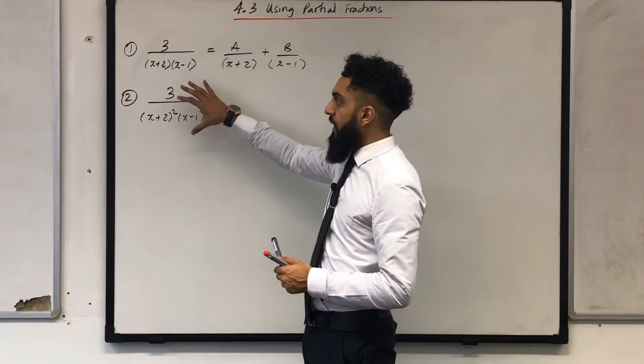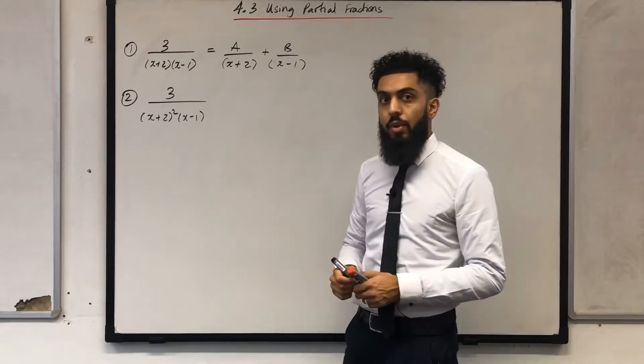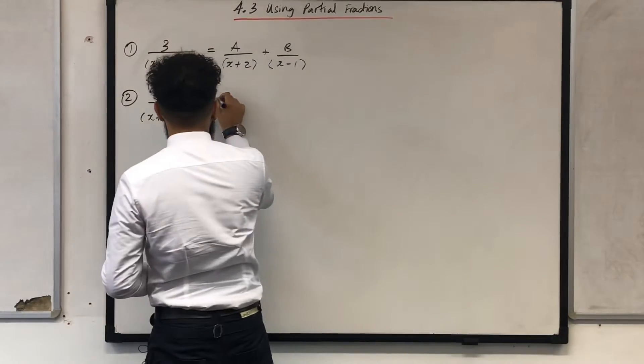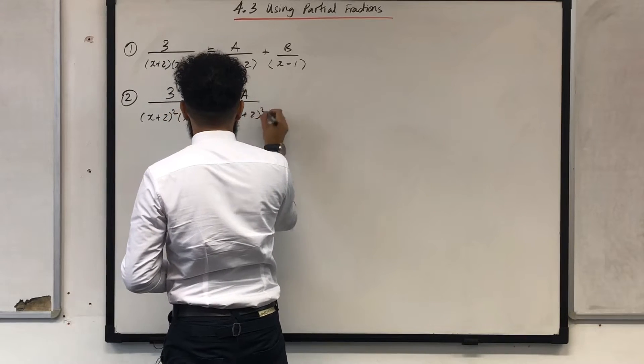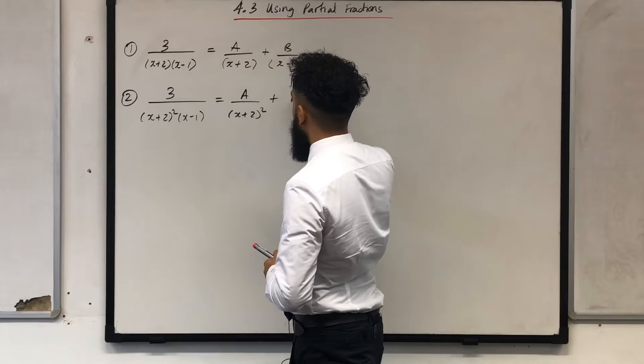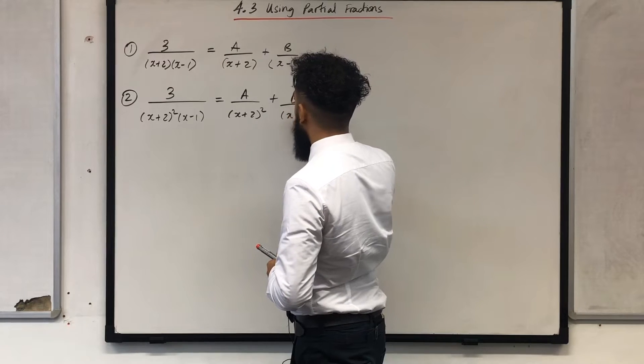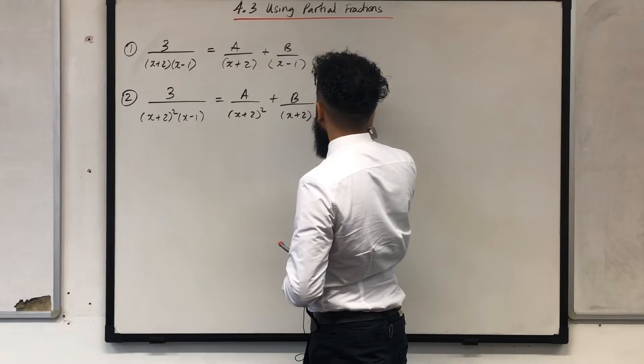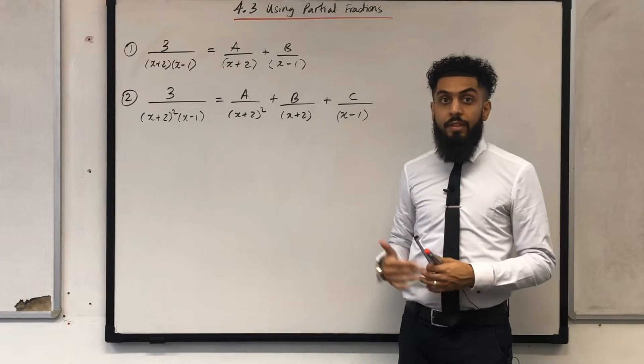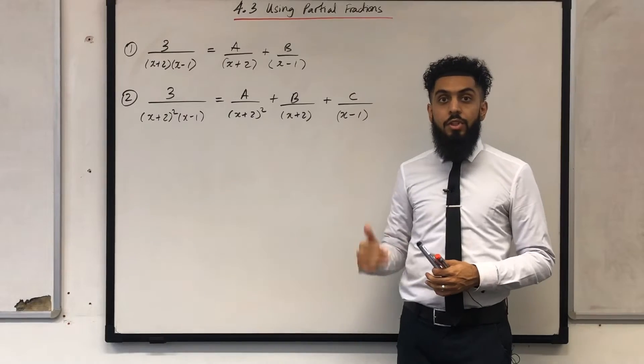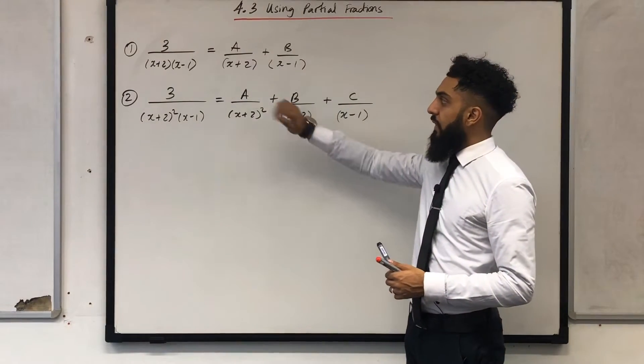So if I want to represent this in partial fraction form I need to write the following: a over x plus 2 in brackets squared plus b over x plus 2 in brackets plus c over x minus 1 in brackets. Then I can use my standard method of substitution to work out the values of a, b and c.